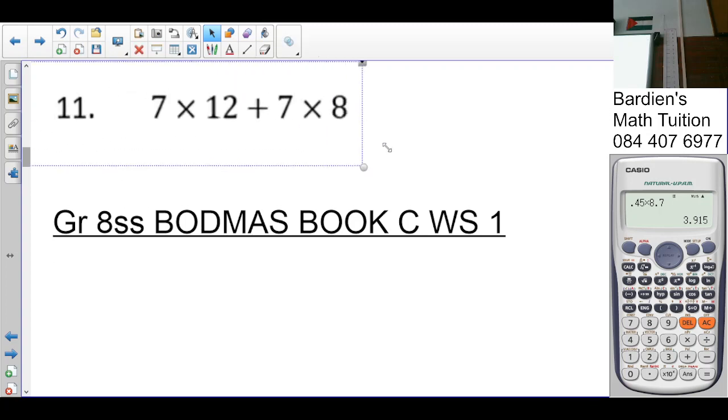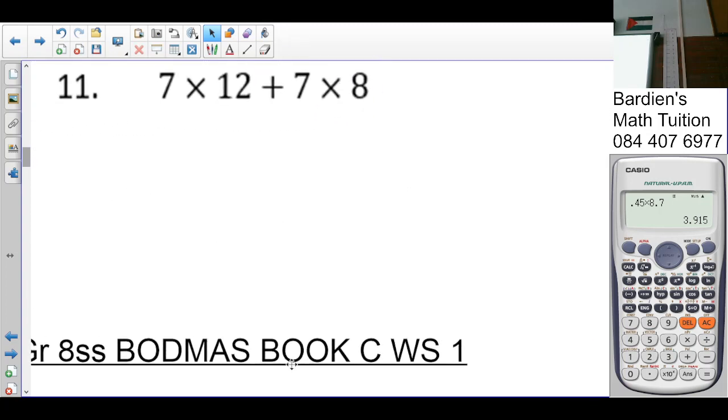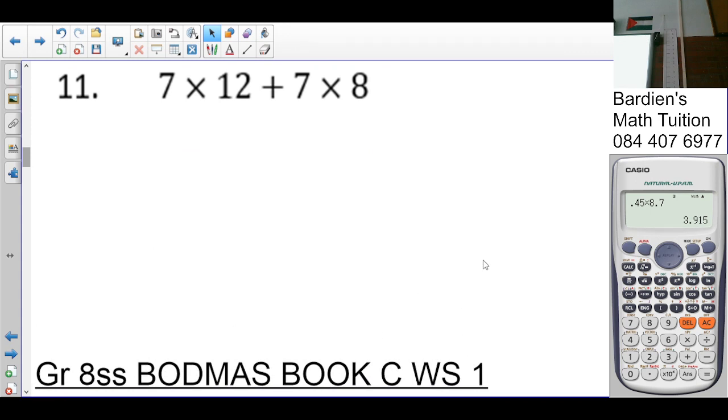Number eleven. What needs to be done first? Multiplication. Okay, this is the same as number one. Multiplication first. Twelve times seven is eighty-four plus seven times eight is fifty-six. Six plus four is ten. Carry one. Thirteen, one, forty. Is that correct? Yes. Any confusion?